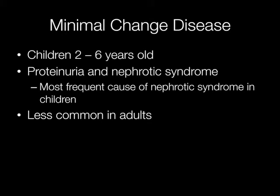Minimal change disease, or minimal change nephropathy, is the most frequent cause of nephrotic syndrome in children. The peak age of occurrence is between 2 and 6 years old. Minimal change disease also occurs in adults, but less commonly than in children.